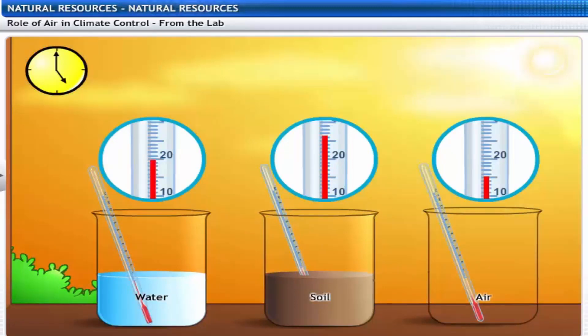Do you notice a difference in the readings? The temperature reads more in the second beaker than in the others. This indicates that soil gets heated faster than water and air.